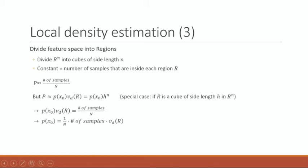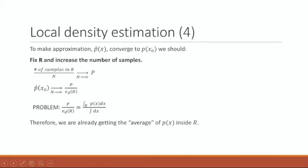Note there is a special case: if R is a cube of side length H in R^n, we would have the probability equaling the density at X0 times H to the d. To make the approximation converge to the density at X0, we need to fix R and increase the number of samples. As N goes to infinity, the number of samples in R divided by N goes to P, and the approximation goes to P divided by the volume. Therefore, we are already getting the average of P inside of R, where P divided by the volume equals this expression.